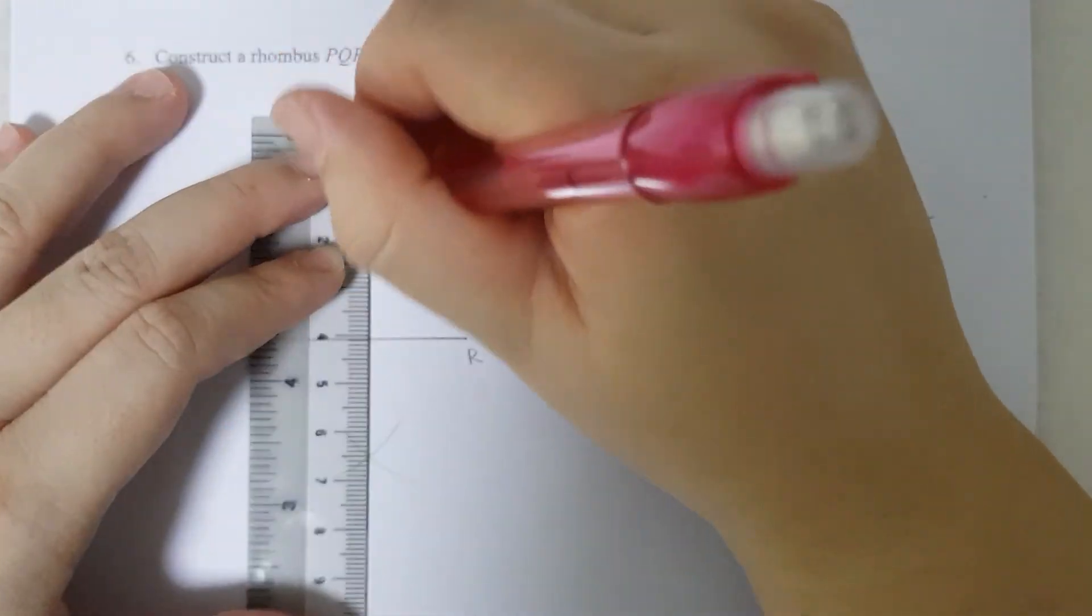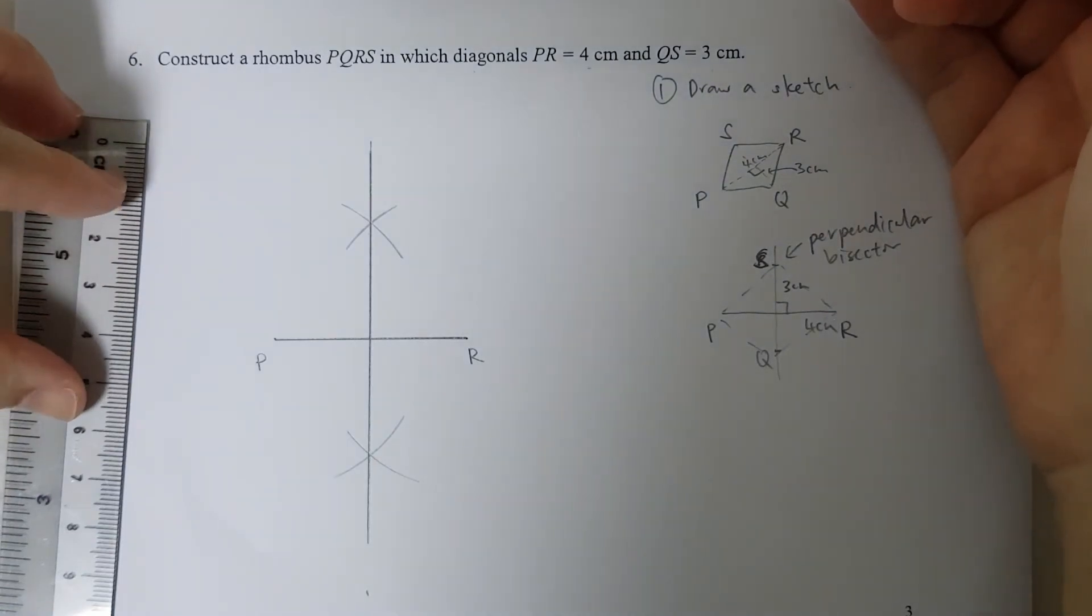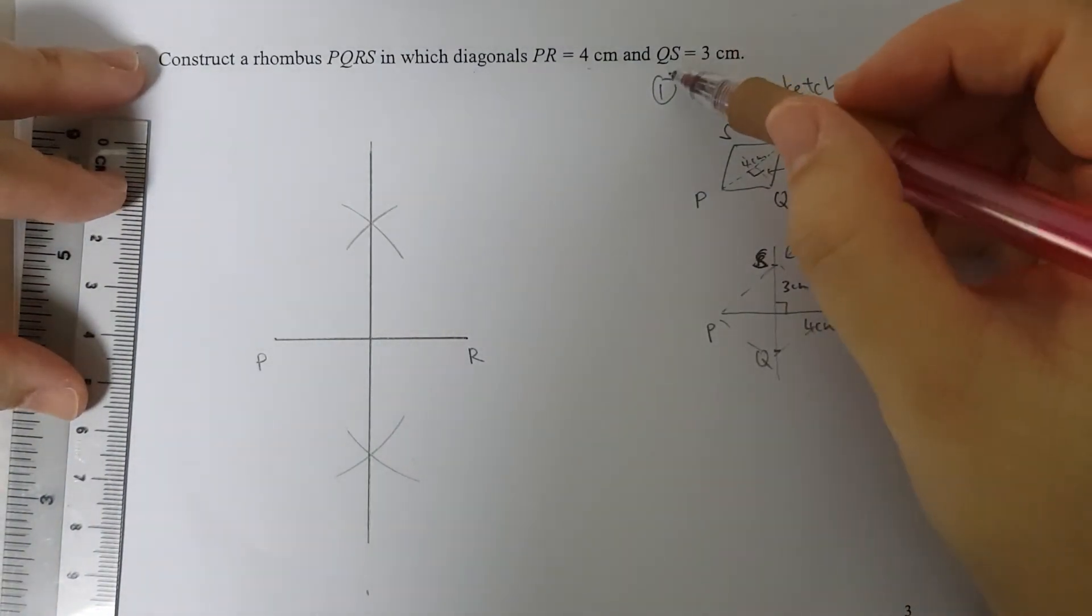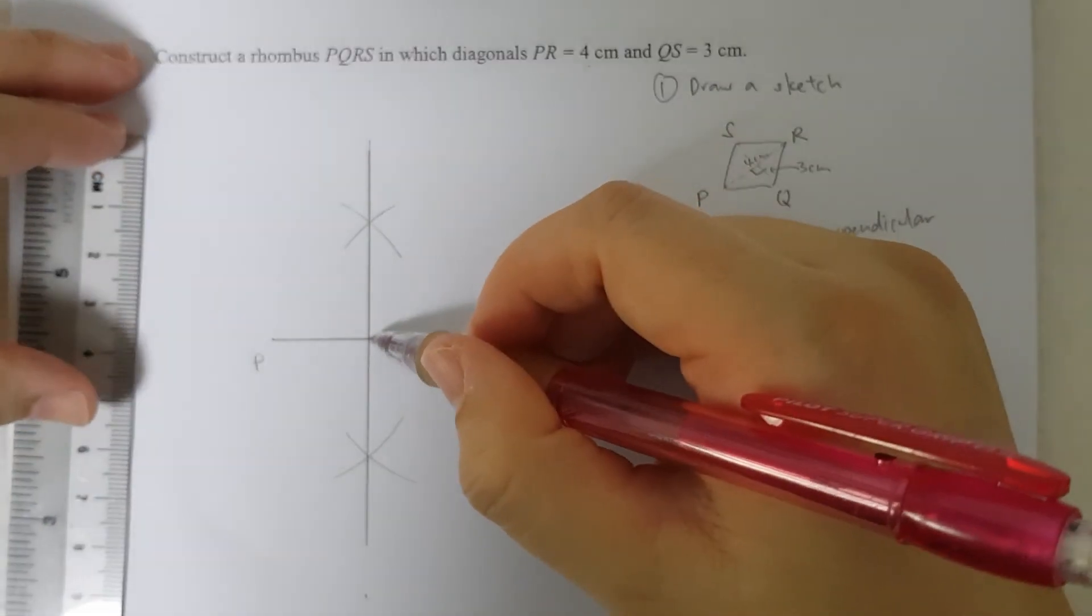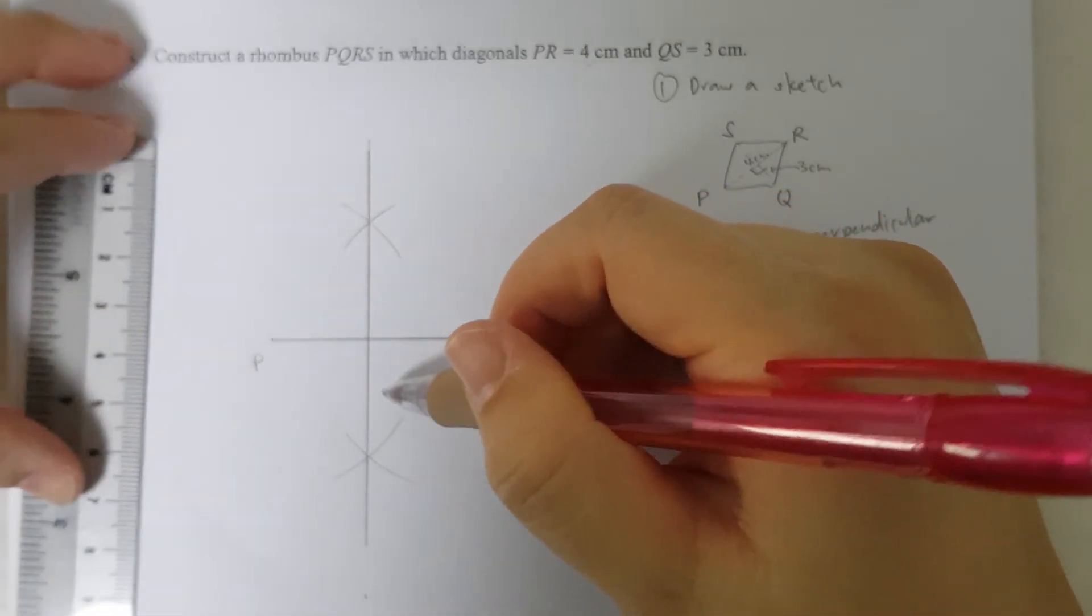And I have my perpendicular bisector of PR. I'm not going to worry about the length first—I'm just going to draw the perpendicular bisector of PR. Then since they want QS to be 3 cm, I'll need 1.5 cm above the line PR and 1.5 cm below the line PR.